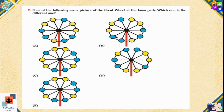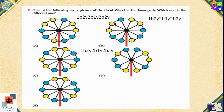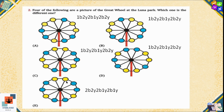Question number two: Four of the following are a picture of a Ferris wheel at the Luna Park. Which one is the different one? If we look at the sequence of the balls, there is one blue, two yellow, two blue, one yellow, two blue, and two yellow balls. Similar sequences are repeated in options A, B, C, and D. But in option E, there are two blue, two yellow, two blue, one yellow, two blue, and one yellow — which is different from the rest. So option E is the correct option.